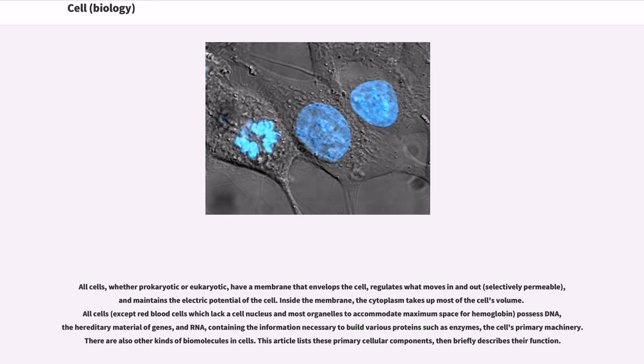All cells, except red blood cells which lack a cell nucleus and most organelles to accommodate maximum space for hemoglobin, possess DNA, the hereditary material of genes, and RNA, containing the information necessary to build various proteins such as enzymes, the cell's primary machinery. There are also other kinds of biomolecules in cells.